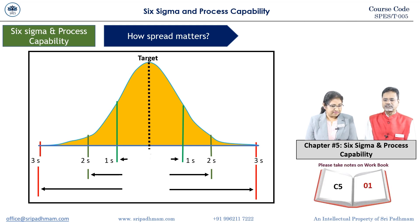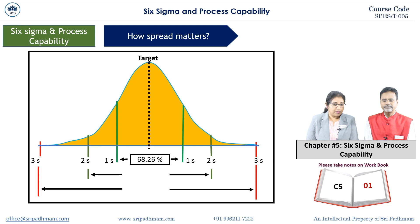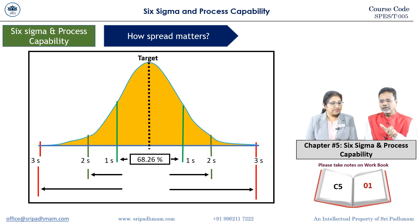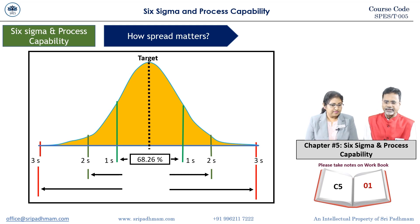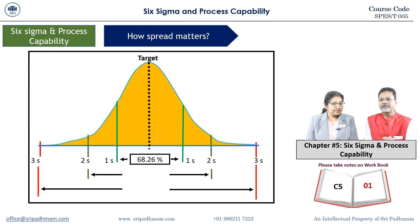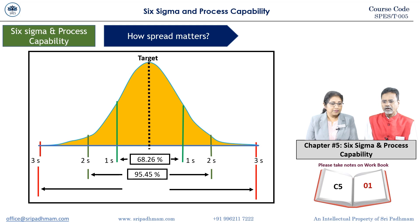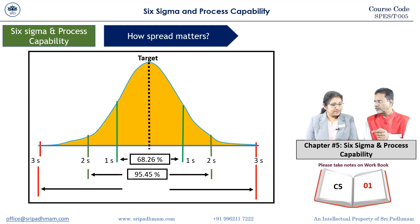Plus minus one sigma, that is a two sigma level, covers 68.26 percent of the total population. Plus minus one sigma will occupy 68.26 percent of the total spread. Then plus minus two sigma, that is four sigma level — generally the 95 percent confidence level. Precisely it is 95.45 percent of the total population area.